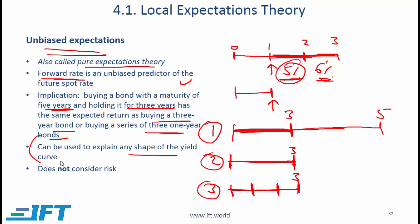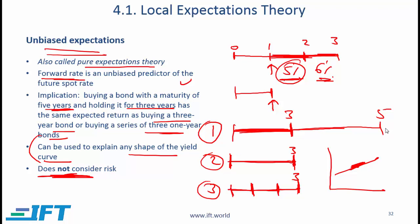This theory can be used to explain any shape of the yield curve. If the yield curve is upward sloping, then this is explained by the fact that the expected future spot rates are higher than the spot rates today. It should be clear that this theory does not consider risk. A higher maturity bond obviously has more interest rate risk, and investors would like compensation for that higher interest rate risk, but this particular theory does not accommodate that risk.